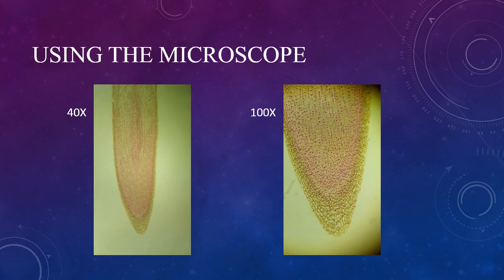At 40x total magnification, I can plainly see the tip of the onion root. At 100x, I can see individual cells, but not a lot of detail yet, so I need more magnification.